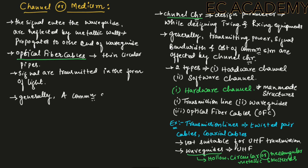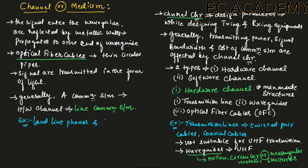A communication system that makes use of a hardware channel is called a line communication system. Examples of line communication systems are landline phones and cable TV networks.